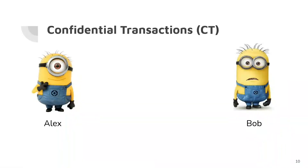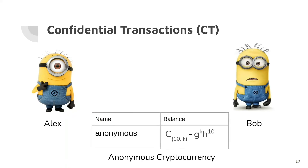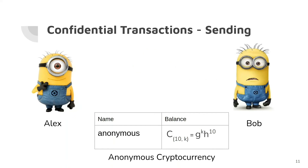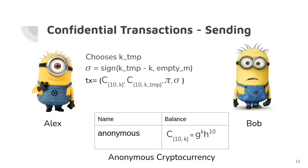Now we can explain confidential transactions. Instead of coin amounts in plain text, we store Pedersen commitments in the cash system. Similar to the previous example, Alex wants to send 10 coins to Bob. First, Alex chooses a temporary key k_temp. Then he creates a signature on an empty message where the signing key is the difference between the temporary key and the key of the Pedersen commitment. He then creates a transaction stating the current commitment, the new commitment, the range proof for the new commitment, and the signature, and sends the transaction to the cash system.